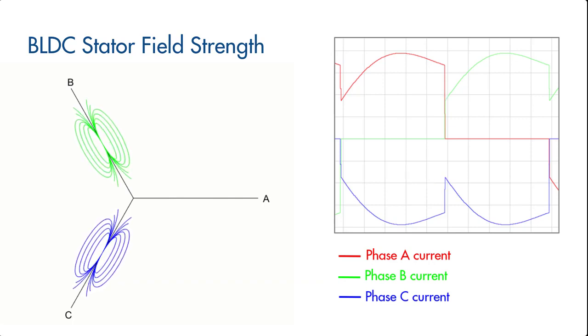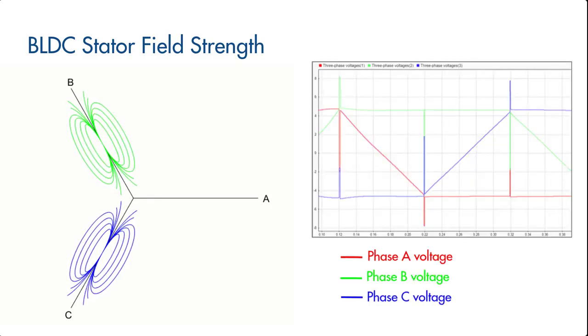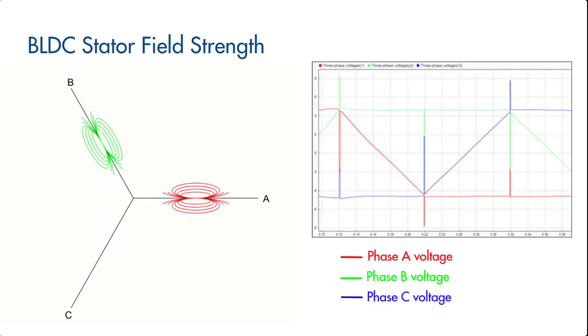As a result of these instantaneous changes in the phase currents, we observe spikes in the three-phase voltages. This phenomenon we just described is called inductive flyback.